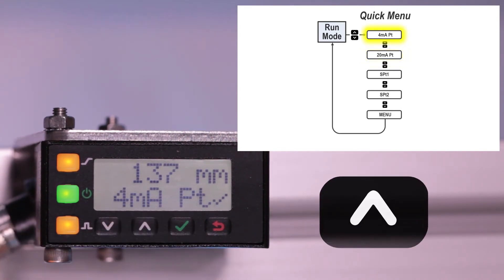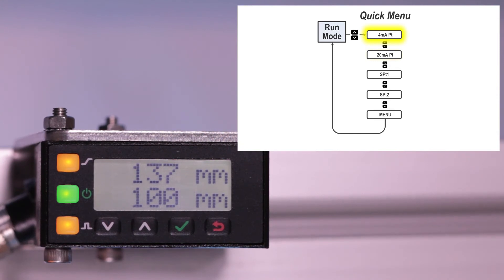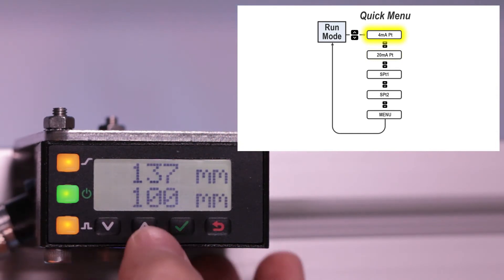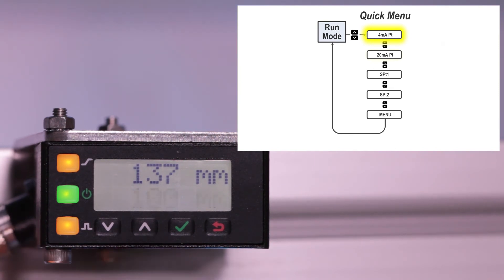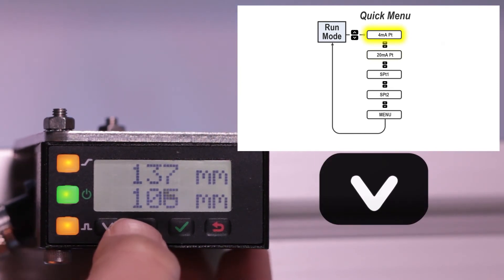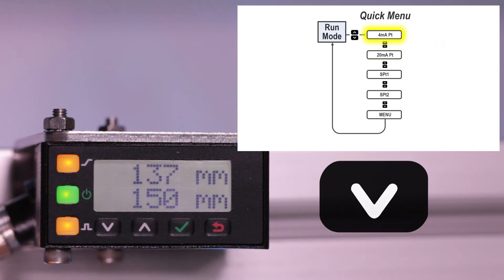Go back up to the 4mA point. Click Enter and the 4mA value will now start flashing, indicating that the up and down buttons can be used to manually adjust the value without having to present a target.